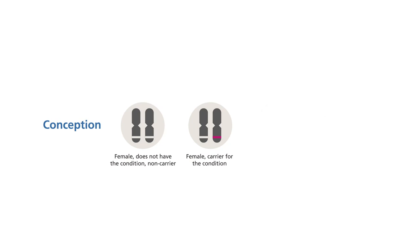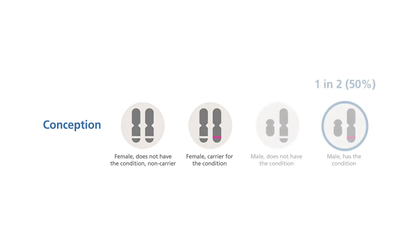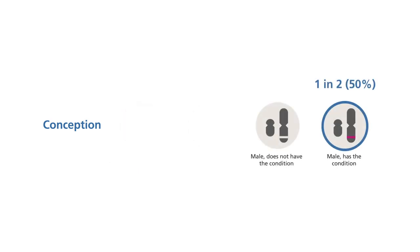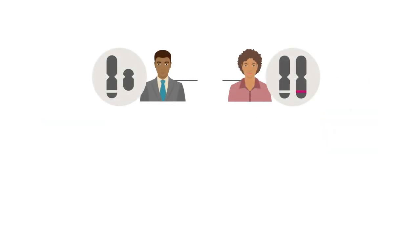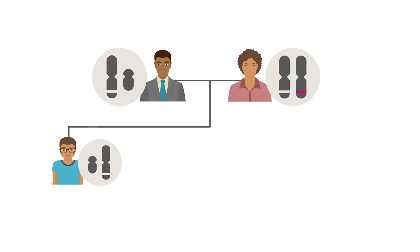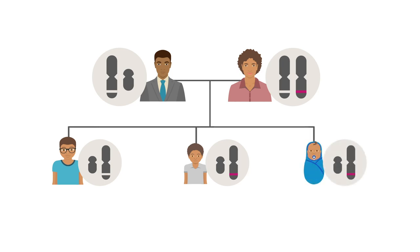The daughters of women who are carriers for an X-linked condition do not usually show signs of the condition, while sons have a 1 in 2 chance of having the condition. Each one of the possible outcomes shown here is equally likely, and it is important to remember that chance has no memory, so the chance that each son will inherit an altered copy of the gene and therefore develop the condition is 1 in 2 or 50% each time.